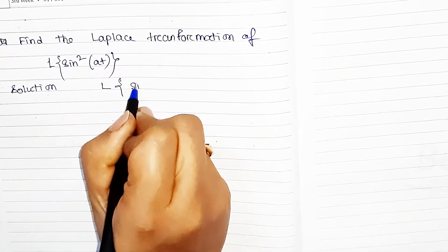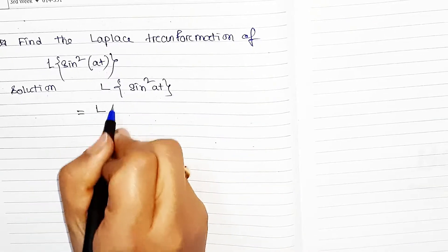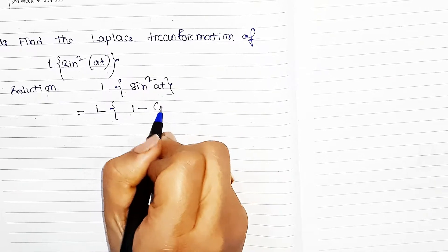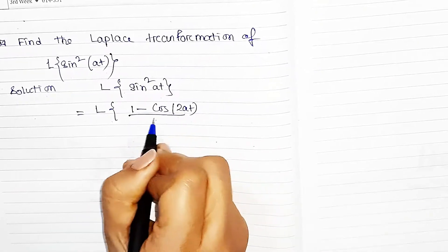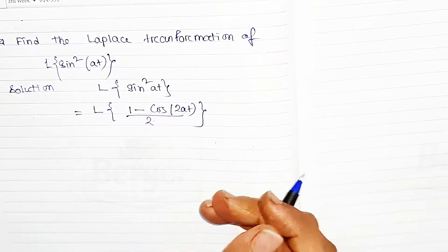L of sin²(at). We can write sin²(at) as (1 - cos(2at))/2. This is the formula of sin²(at).